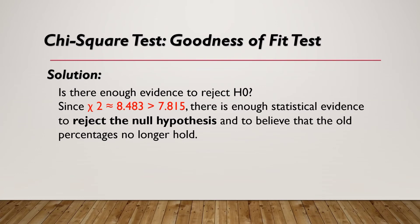Since our chi-square value of 8.483 is greater than the critical value of 7.815 from the chi-square distribution table, there is enough statistical evidence to reject the null hypothesis. We conclude that the old percentages no longer hold, because our chi-square value falls in the rejection region.